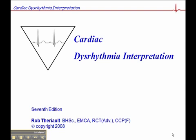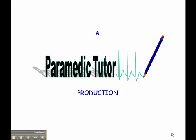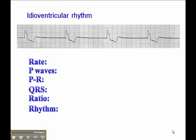On page 71 of your Cardiac Dysrhythmia interpretation book, you'll find an idioventricular rhythm. This is a rhythm where the focus originates from the ventricles. In other words, the focus that depolarizes the myocardium originates from the ventricles.